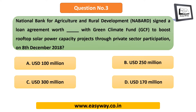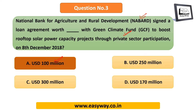Question 3: NABARD, that is National Bank for Agriculture and Rural Development, has signed a loan agreement worth how much with the Green Climate Fund to boost rooftop solar power capacity projects through private sector participation? The answer is USD 100 million. Know the full forms: GCF for Green Climate Fund, and be ready to expand NABARD as a simple potential question.